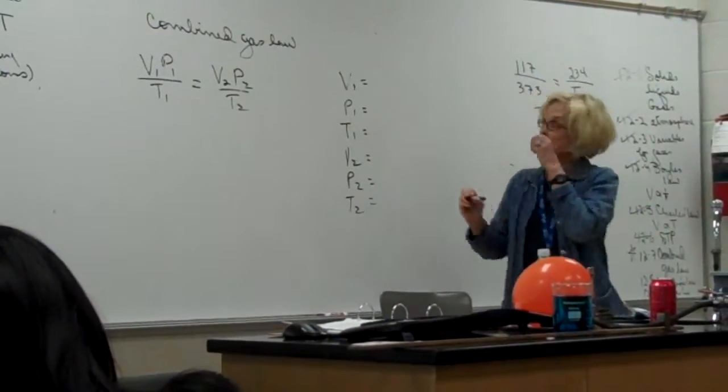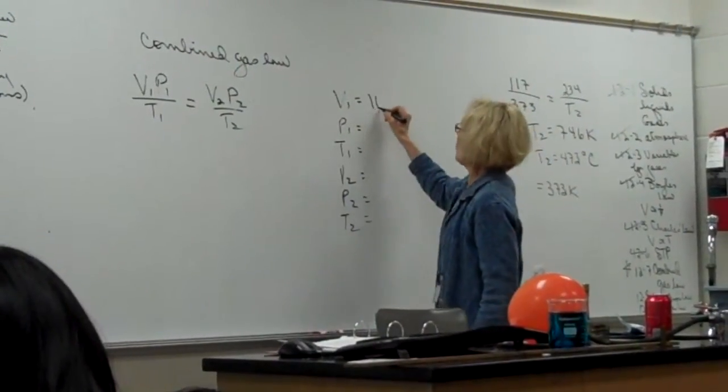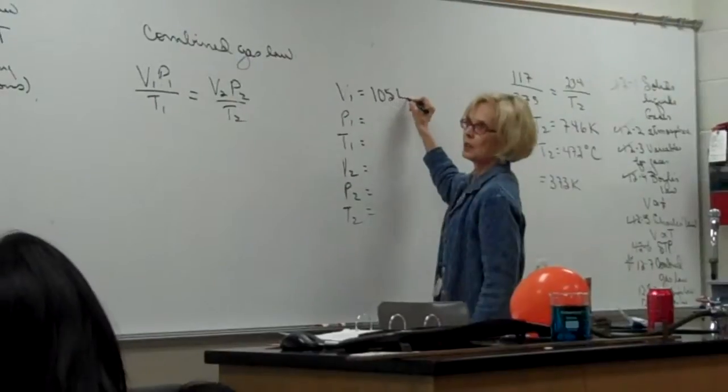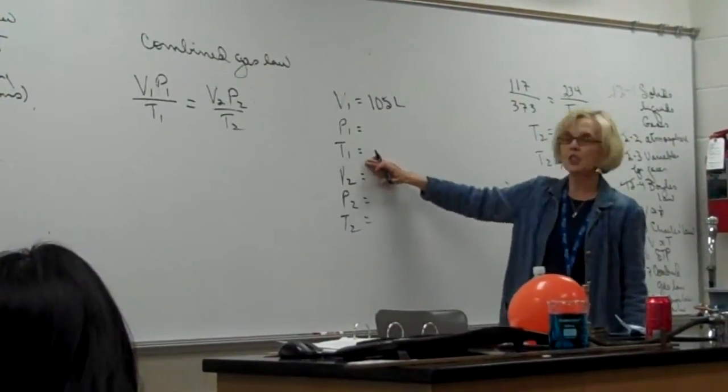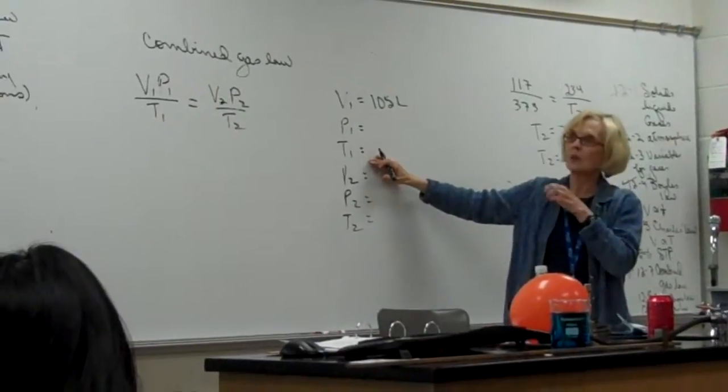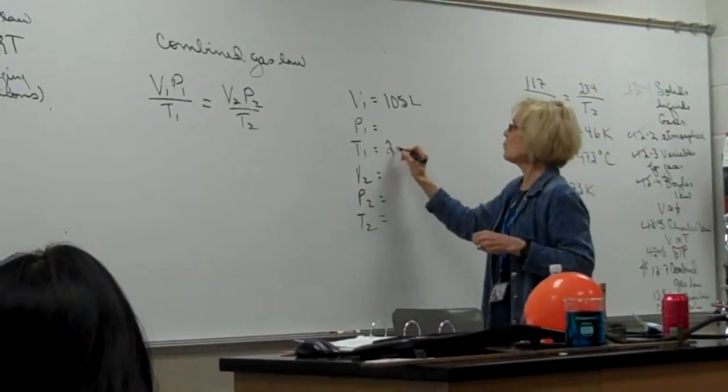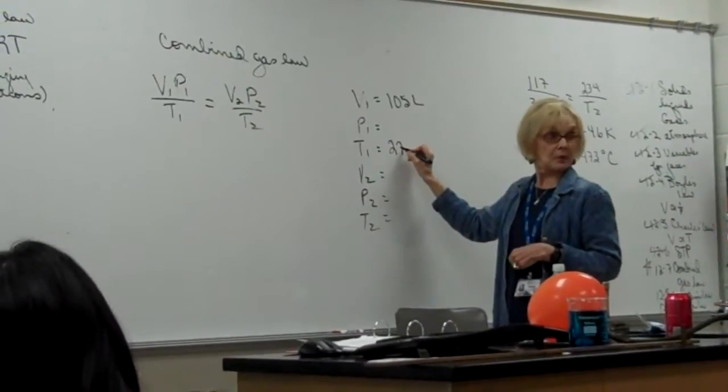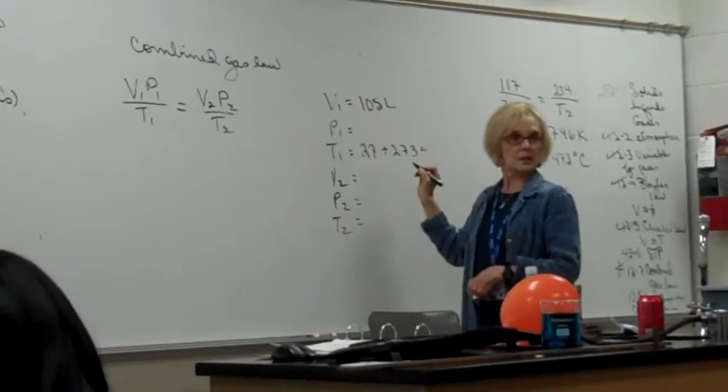Now let's search through that. We have to look for V1, P1, T1, V2, P2, T2. So let's analyze. Nikki, what's V1? 105. 105 units? Liters. Liters. Then Allison, what is T1? 273. And what are you going to do? Plus 273.